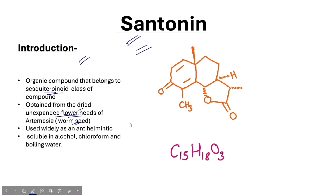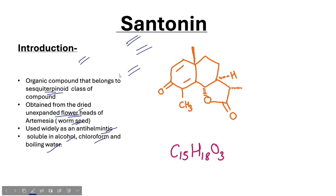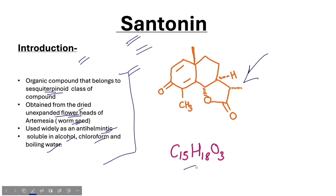If we talk about its properties, it is used as an anti-helminthic compound. The second point is that Santonin is soluble in alcohol, chloroform, and boiling water. You can also see Santonin's structure here. It is called C15H18O3.